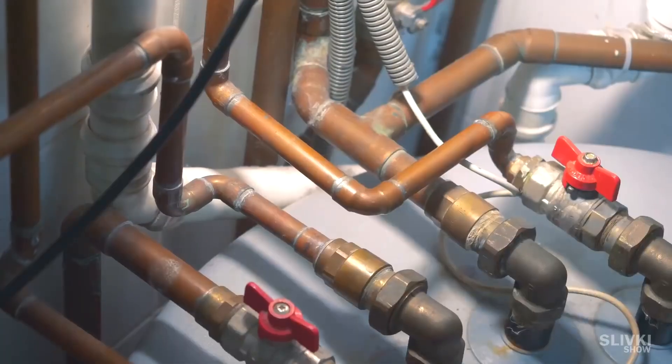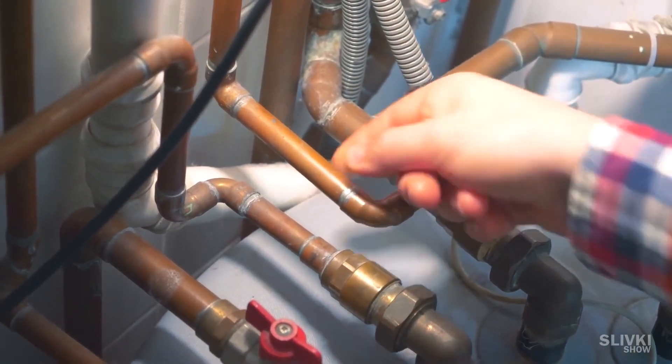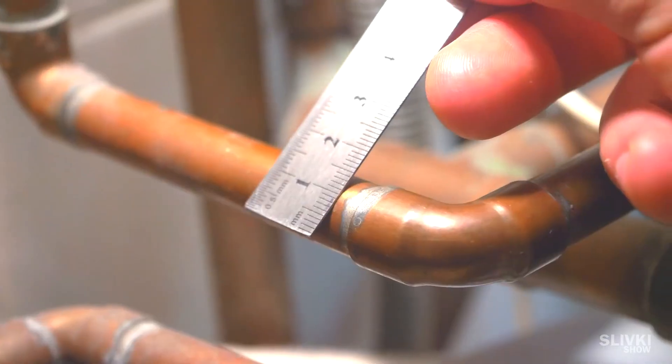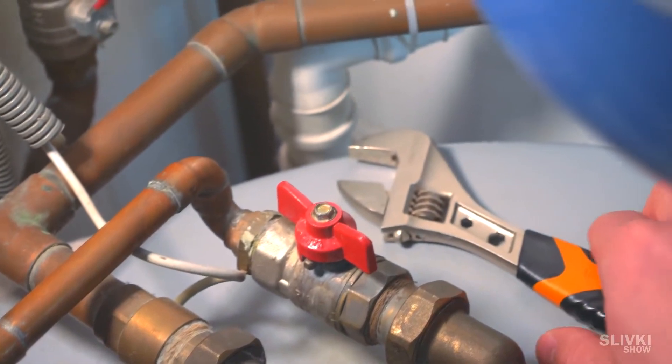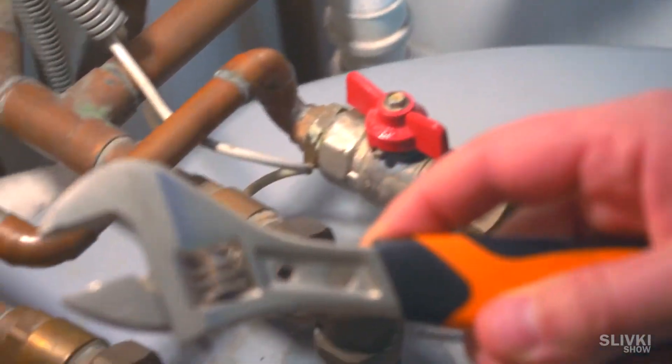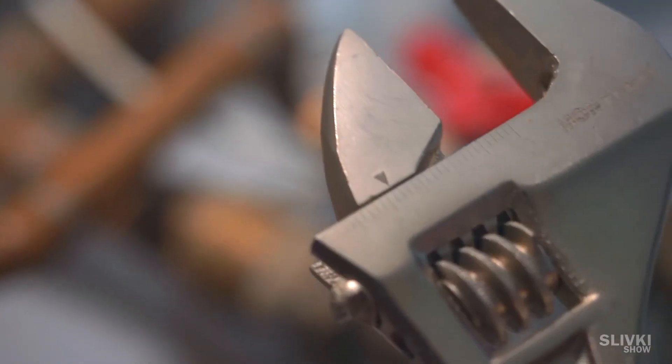It happens quite often when you need to find out the diameter of a circle but unfortunately you can't because of the ruler. But if you have a pipe wrench at hand, then using it you can make it easy.